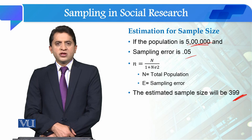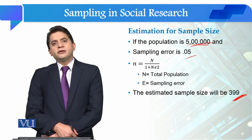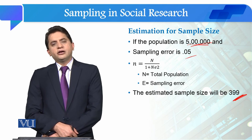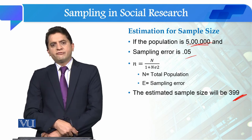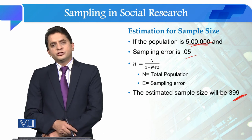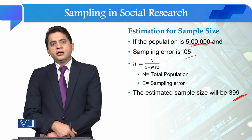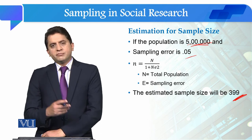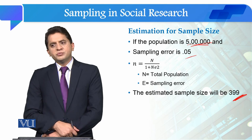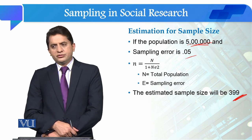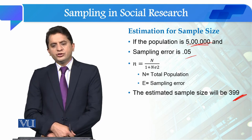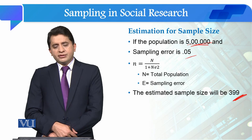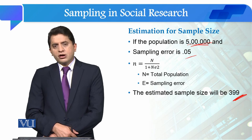We come to know that after a certain figure of population, if the population increases, the sample size increases relatively less. So there is a diminishing increase in the required sample size as population grows.